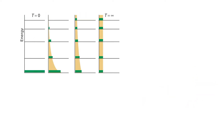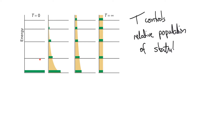Using the Boltzmann distribution, we can see that temperature affects the relative population of the states. At absolute zero, there's zero probability of being in any state other than the ground state. As we increase the temperature, the probability of accessing a higher energy state increases — though the higher energy the state, the lower the probability. At infinite temperature, you can access all energy states with equal probability. The total probability must always equal one, so the area under the distribution curve is the same — at absolute zero everything is in the ground state, and at infinite temperature every state is equally distributed.